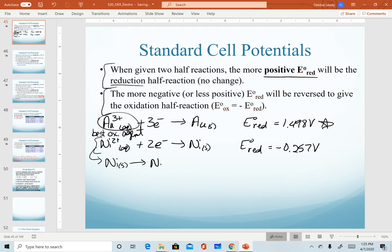This will now be written as the oxidation of nickel and become a positive oxidation potential of 0.257 volts. That's because we determined that nickel solid was the best reducing agent, the easiest to oxidize of that list.